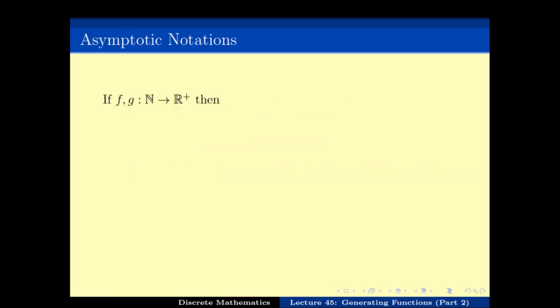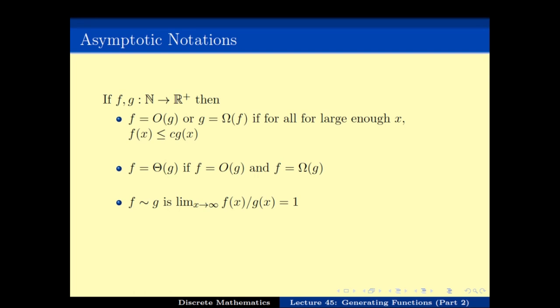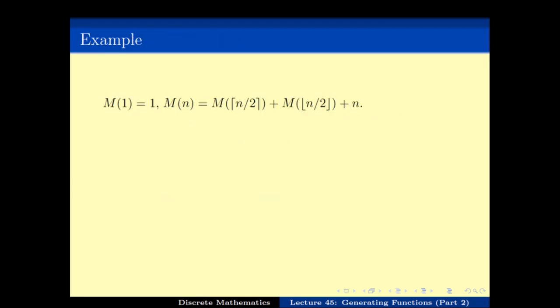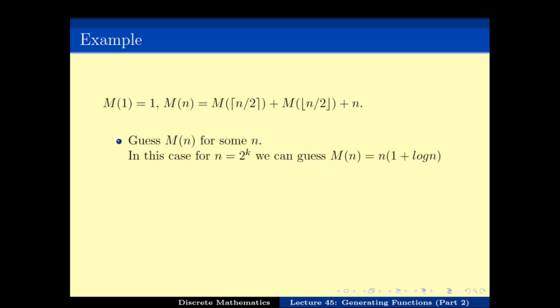We can use asymptotic notations — big O, big omega, theta, small omega, and small o — to come up with asymptotic expressions for these sequences, which is possibly good enough. For example, one way of approaching a recurrence is to first guess Mₙ for some nice n, such as n equals a power of 2, and then show that Mₙ equals theta of n log n.